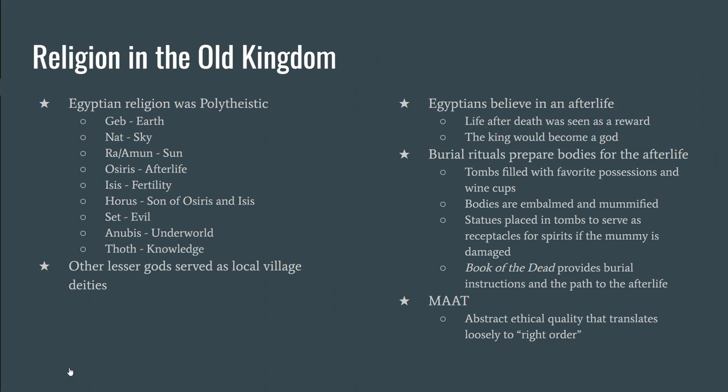Religion in the Old Kingdom: hopefully you know a little about Egyptian religion — it's polytheistic with lots of gods, and it follows the cycles of nature. Some of the bigger gods are Ra or Amun, the sun god; Osiris, the god of the afterlife; Horus, the son of Osiris and Isis; and Anubis, the god of the underworld. There are stories and mythology around them — for example, Osiris was once the ruler of the living.